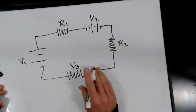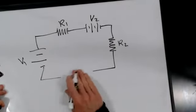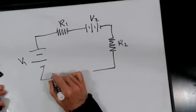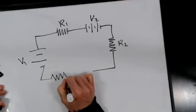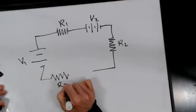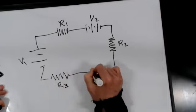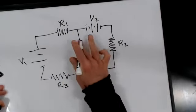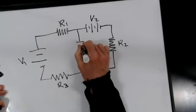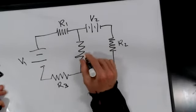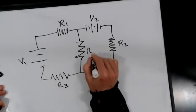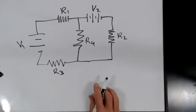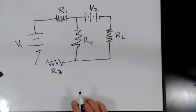Let me make a slightly more complicated circuit than that. Let me put R3 in there. Just so that I have a junction. And so there's a circuit.